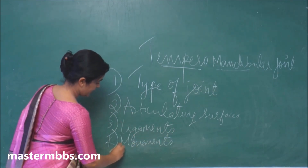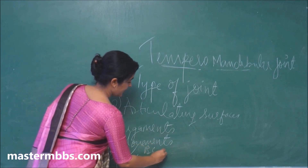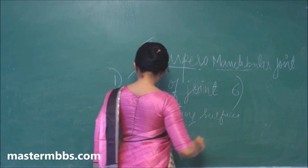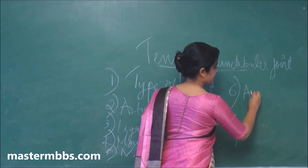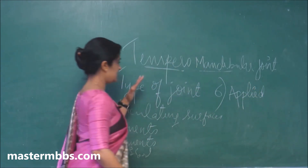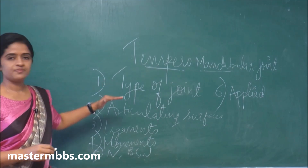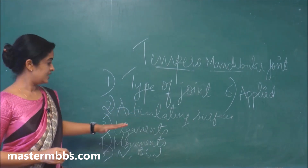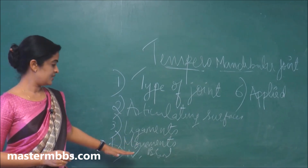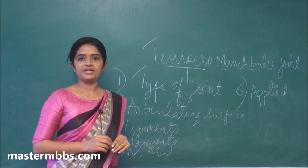Continuing the headings: fifth is nerve supply, sixth is blood supply, and the last but not least is the applied aspects. So whenever you discuss a synovial joint, cover the type, articulating surfaces, ligaments, movements, nerve supply, blood supply, and applied aspects.